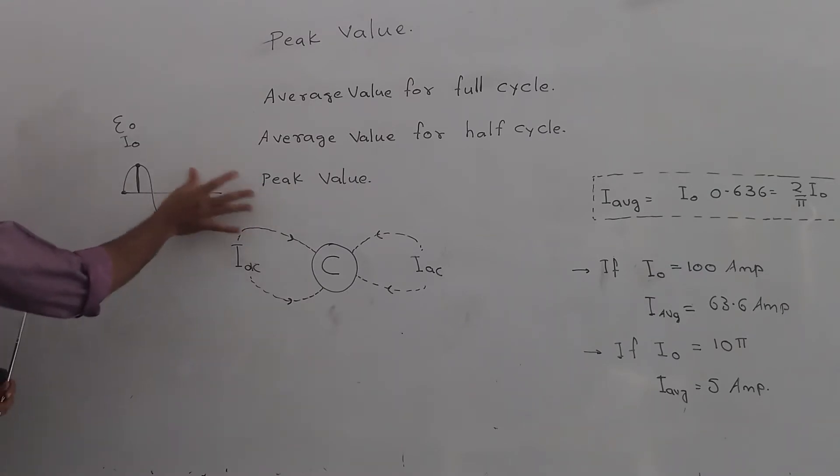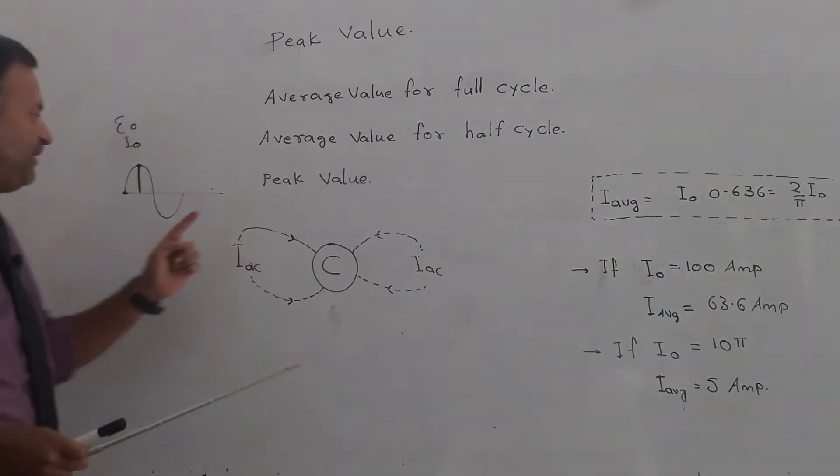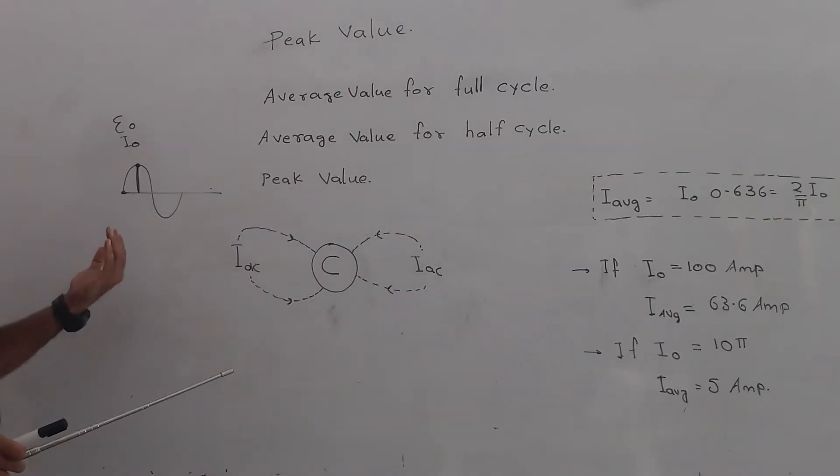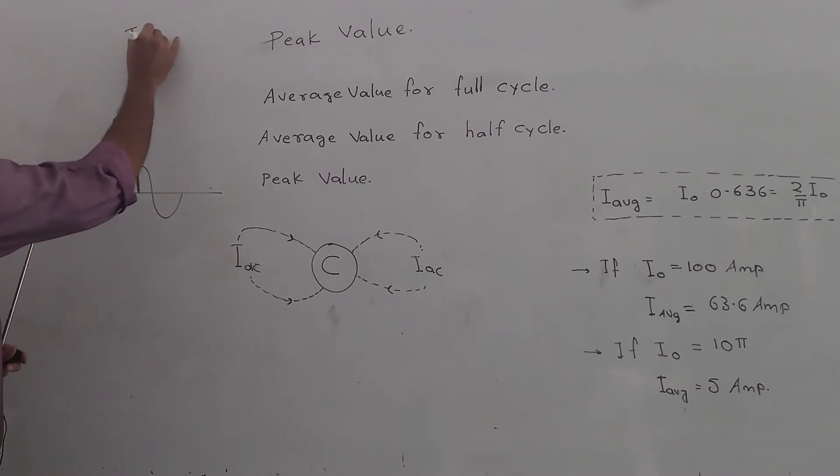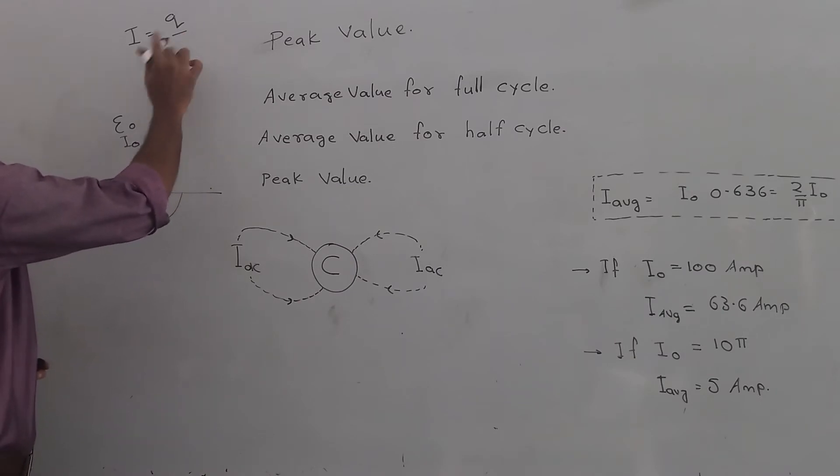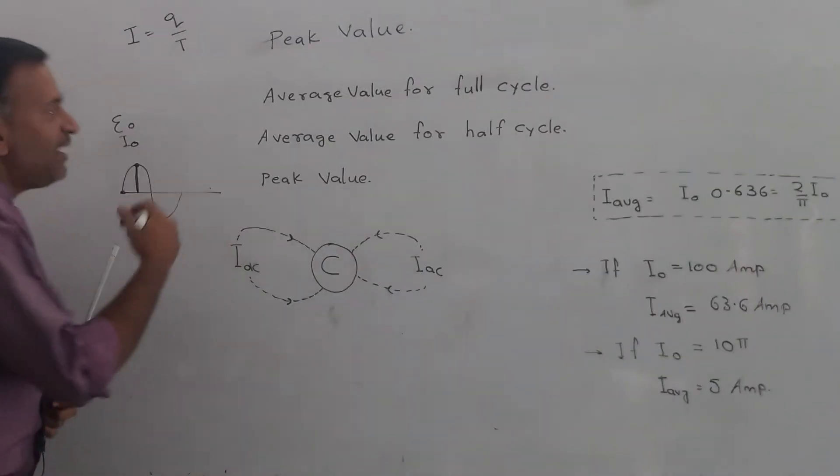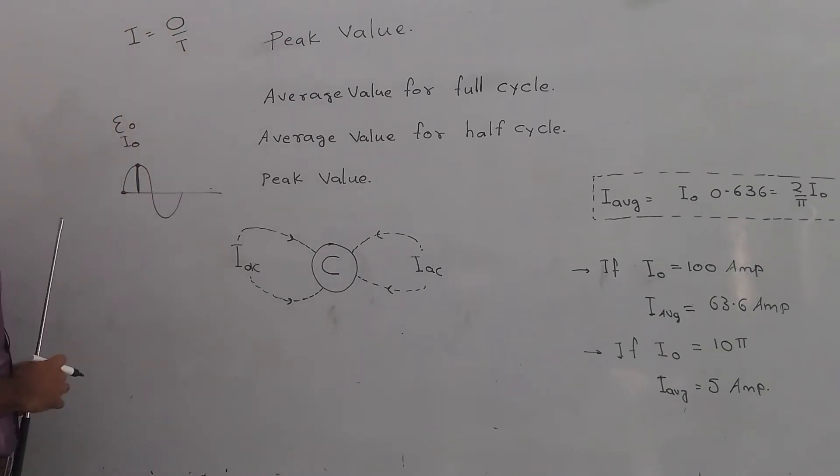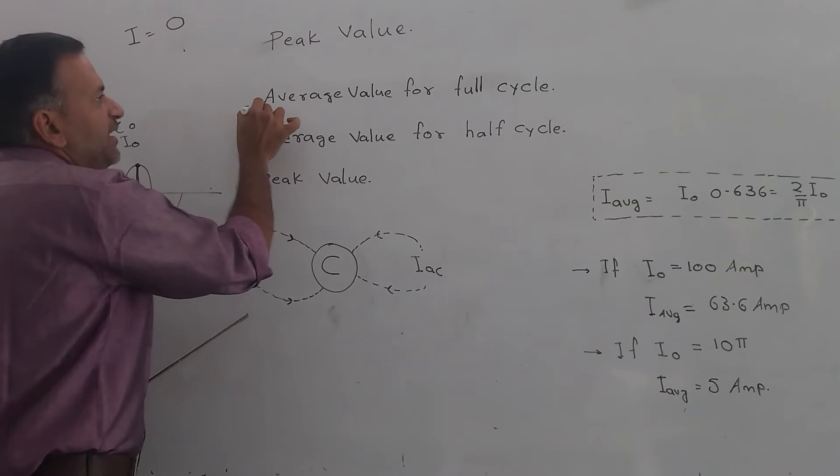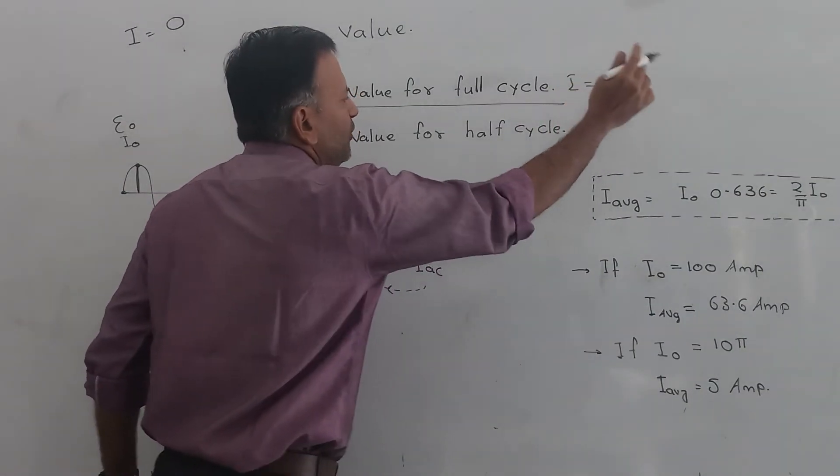In that case, for the positive half cycle, charge goes in one direction, and in the negative half cycle the charge returns back. According to the basic definition of current, which is I equals Q upon T—current is charge passing through a cross-sectional area over time—if we take full time T, then in the positive half cycle charge goes in and in the negative half cycle charge comes out. The total charge transferred is zero, and therefore the average value for full cycle equals zero.